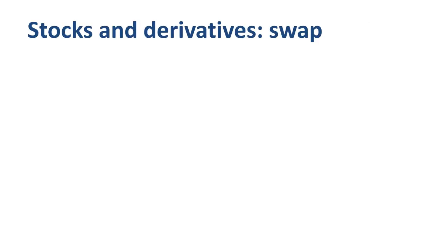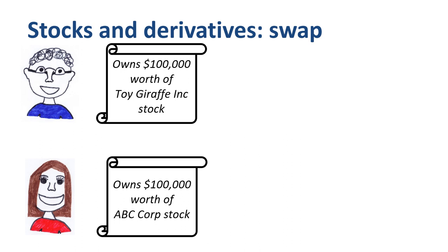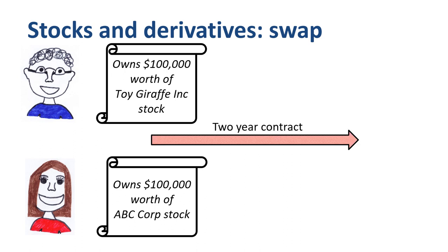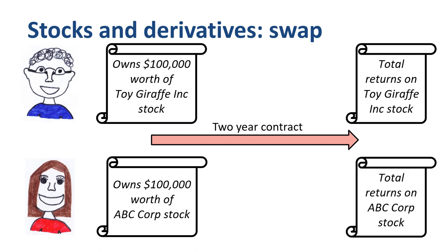A very different type of financial derivative is a swap contract. John owns $100,000 worth of Toy Giraffe Inc. stock, while Jane owns $100,000 worth of ABC Corp. stock. Both of them want to keep their underlying asset, but are interested in getting the returns on the other person's portfolio. To achieve this, they could enter into an equity swap contract. At the end of, for example, a two-year contract, the total returns on the Toy Giraffe Inc. stock — share price gains or losses and dividends — are exchanged or swapped for the total returns on the ABC Corp. stock.